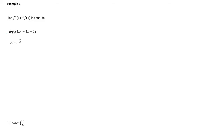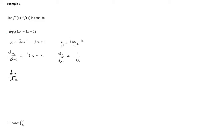Let u equal the content inside the logarithm bracket and y equal to log e of u. Using the chain rule, du over dx is 4x minus 3, and dy over du is equal to 1 over u. So the first step gives dy over dx as 4x minus 3 all over u, where u is 2x squared minus 3x plus 1. That's our dy over dx.